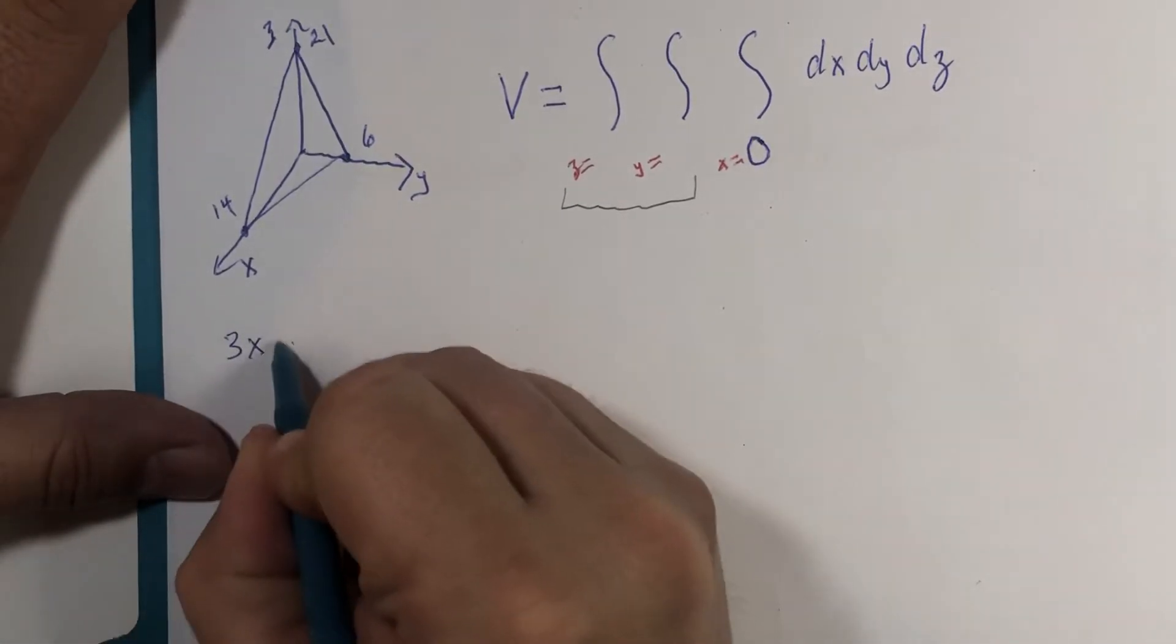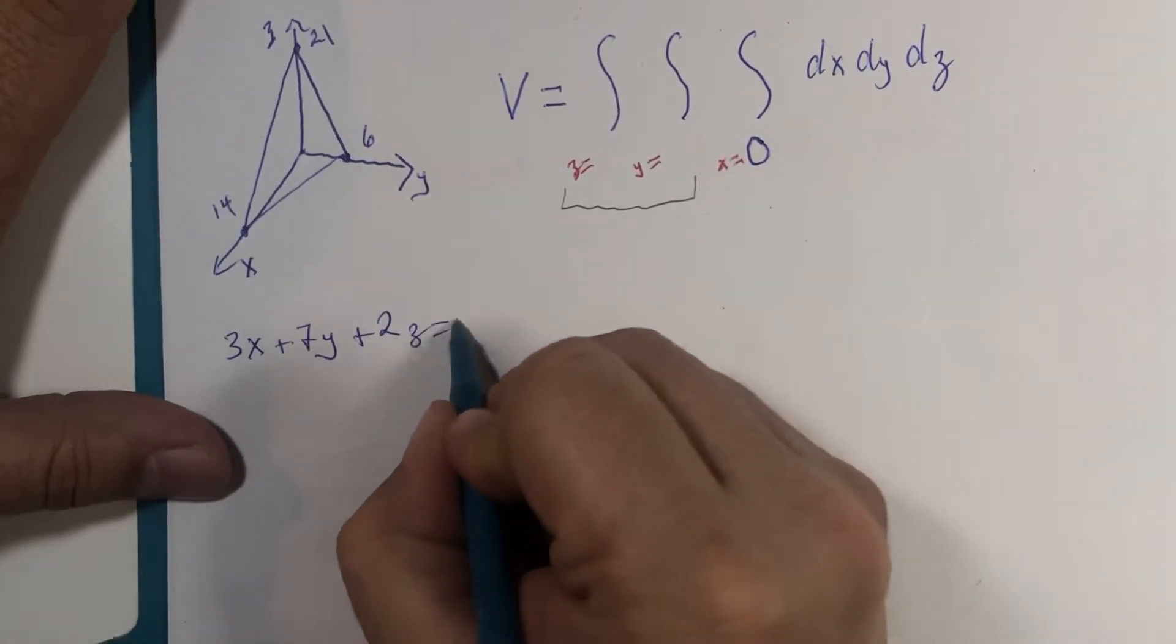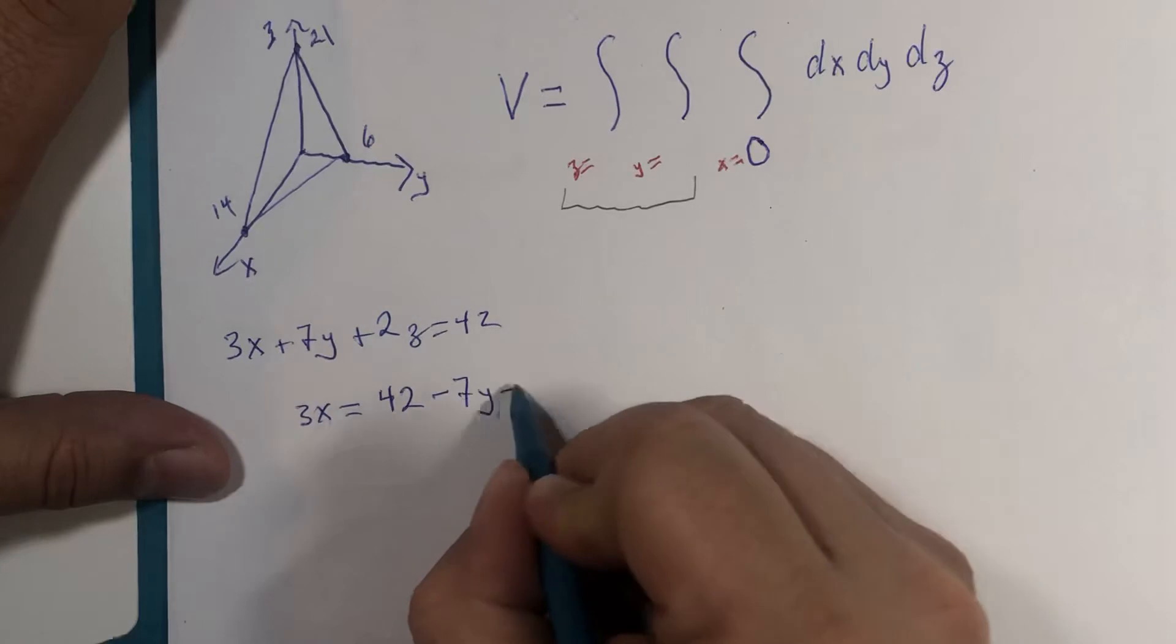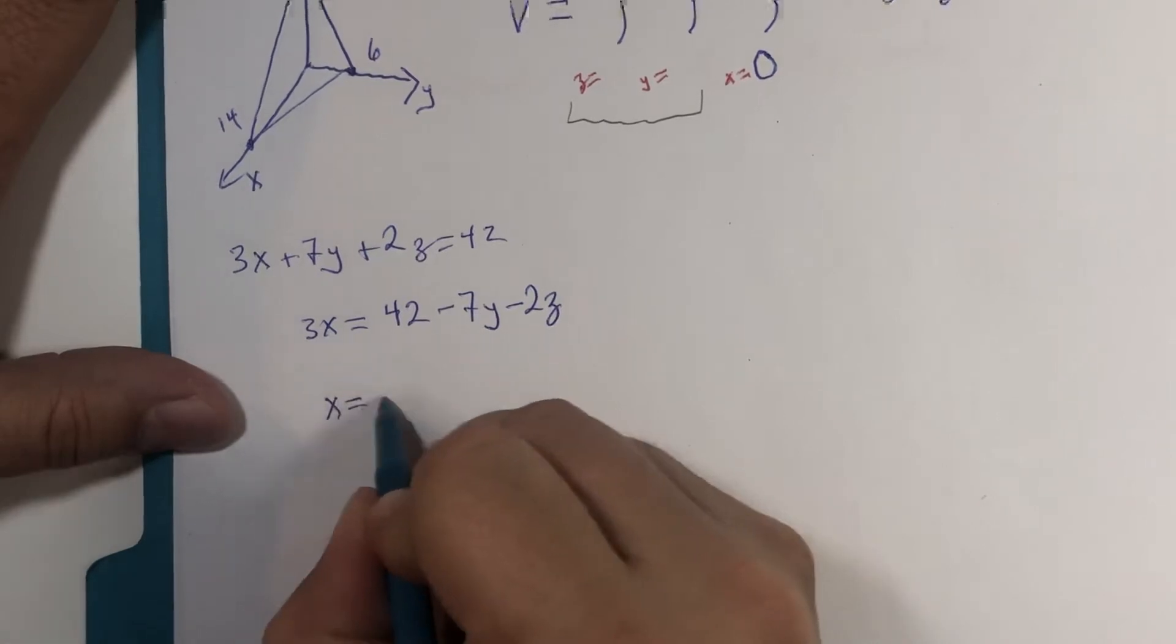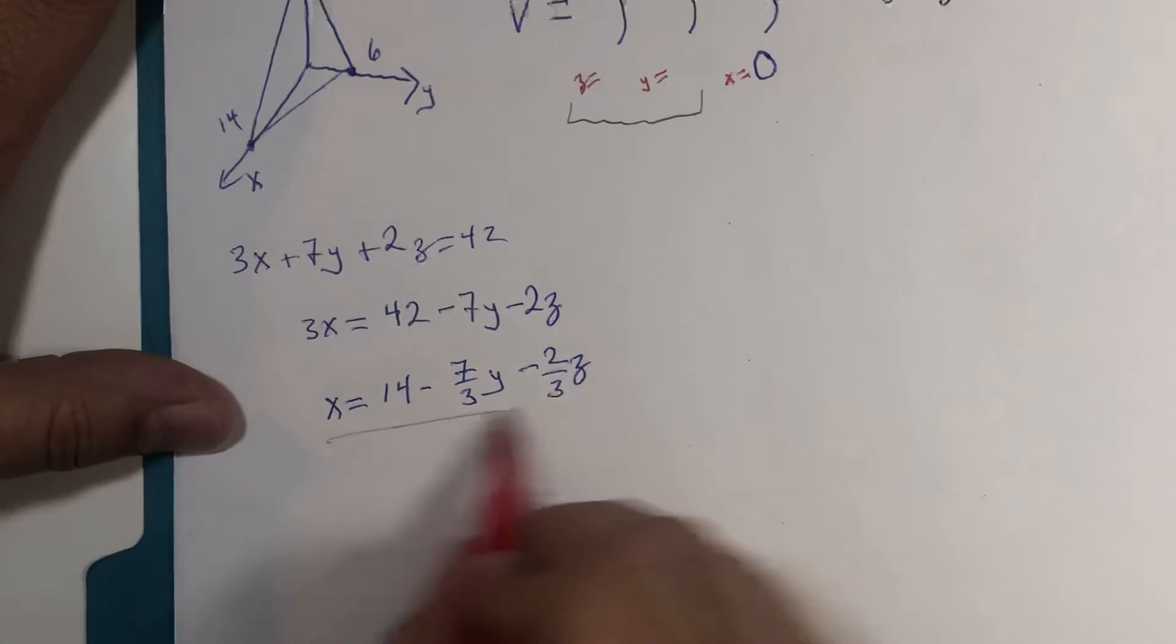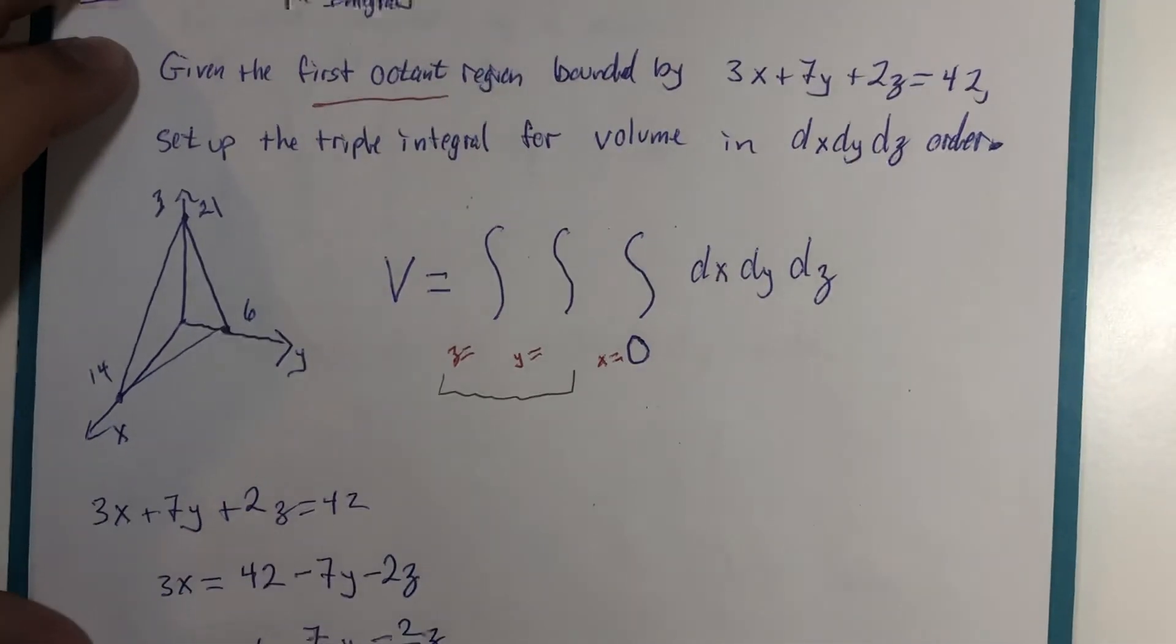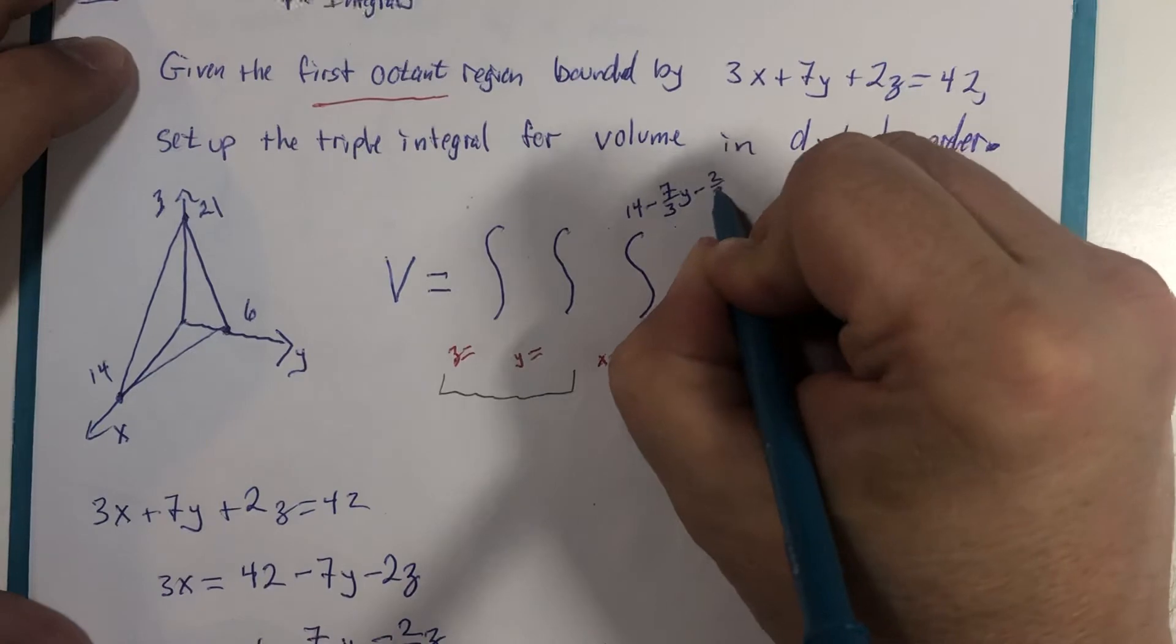So let's do that. We have 3x plus 7y plus 2z is 42. 3x equals 42 minus 7y minus 2z. Divide by 3: 14 minus 7 thirds y minus 2 thirds z. This, my students, is the upper limit of integration in the x direction. So I'm going to come back to my triple integral here: 14 minus 7 thirds y minus 2 thirds z.